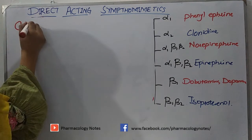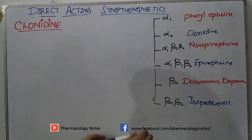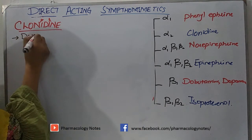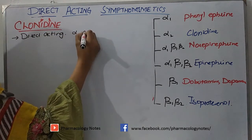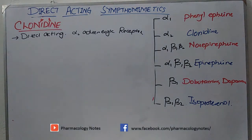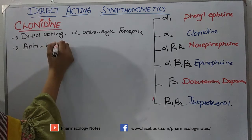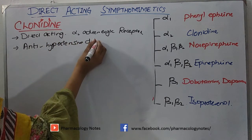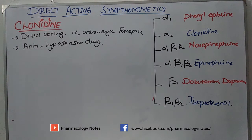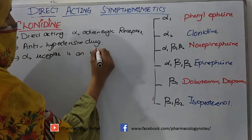We are going to discuss the exceptional drug in direct-acting sympathomimetics: clonidine. Clonidine is direct-acting and acts on alpha-2 adrenergic receptors. It is an alpha-2 adrenergic agonist and it is used as an antihypertensive drug. The reason it lowers blood pressure is that the alpha-2 receptor is an inhibitory receptor.